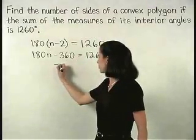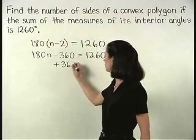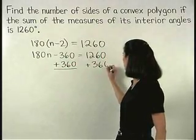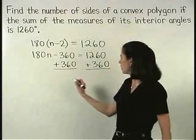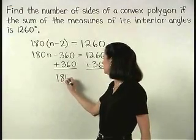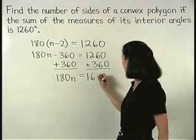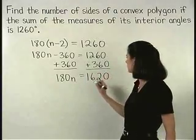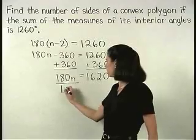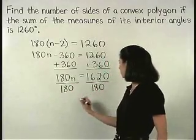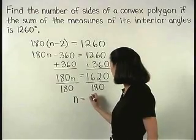And adding 360 to both sides gives us 180n equals 1620. And dividing both sides by 180, we find that n equals 9.